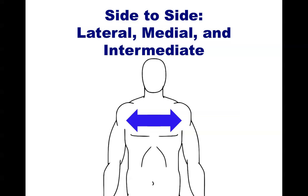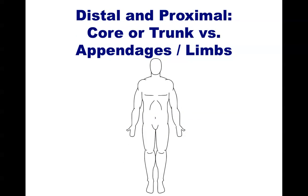Notice that this is going to differ from the next set of terms: distal and proximal. This describes how far something is from your core or your trunk. Your limbs and your extremities, and to some extent your head, are distal. Proximal refers to something that's close to your core or your trunk. Another way of thinking about it is that your fingers are distal while your head is proximal — it's closer to your core or your trunk than your fingers, which can be very far away.